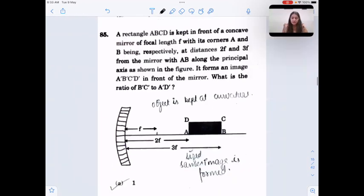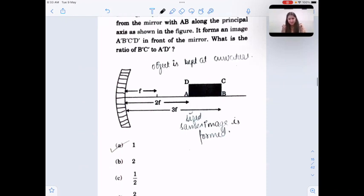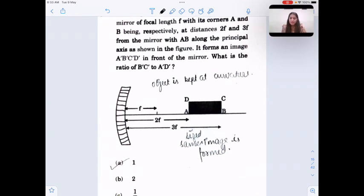This is from optics. A rectangle ABCD is kept in front of a concave mirror of focal length F. Its corner A and B are at a distance 2F and 3F from the mirror with AB along the principal axis. It forms image A dash, B dash, C dash, and D dash in front of the mirror. What is the ratio of BC dash to AD dash? The object is kept at 2F, that is at curvature. So the image formed will be of same size and also AD and BC sides are same. So ratio will be one.